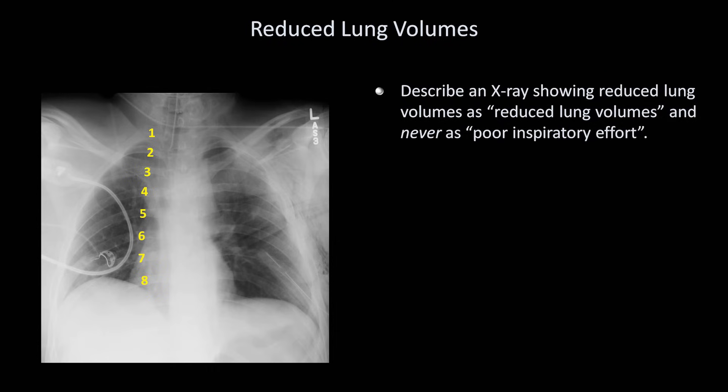The reason for this is that as the x-ray interpreter, unless you were physically present when the x-ray was taken, you have no idea what the patient's inspiratory effort was like. Low lung volumes may be the first sign of otherwise occult disease of the lung interstitium, the diaphragm's neuromuscular apparatus, or thoracic wall. Mislabeling this x-ray as poor inspiratory effort risks missing an opportunity at an early diagnosis of these conditions.